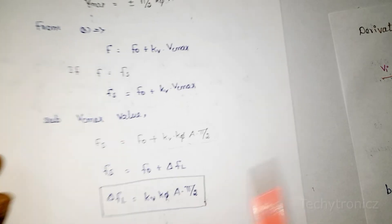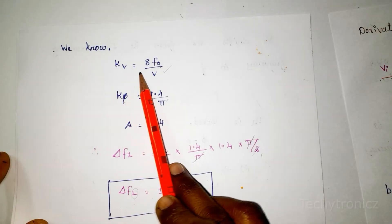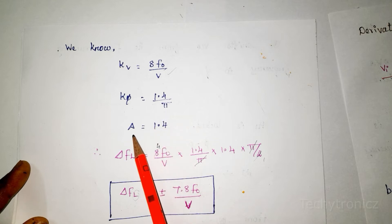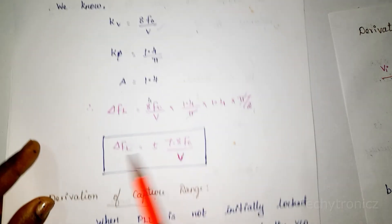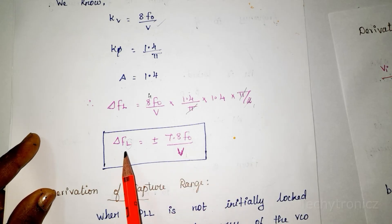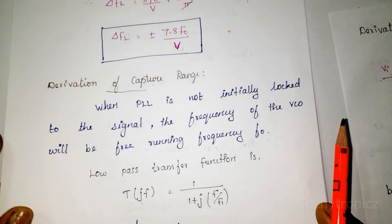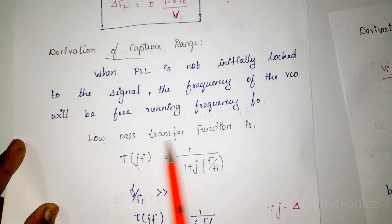Now substituting values: KV = A × F0 / V, Kφ = 1.4/π, and gain A = 1.4. Substituting all values into the lock frequency formula, we get: lock range = ±7.8 × F0 / V. So the lock range of the monolithic PLL IC 565 is 7.8F0 / V. Next, for the capture range, we take the low pass filter transfer function: T(jF) = 1 / (1 + j × F/F1).